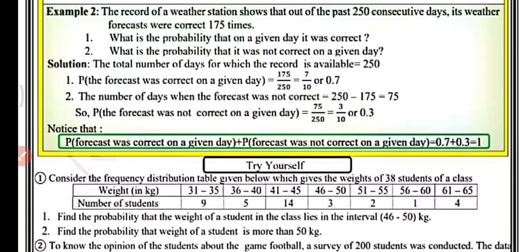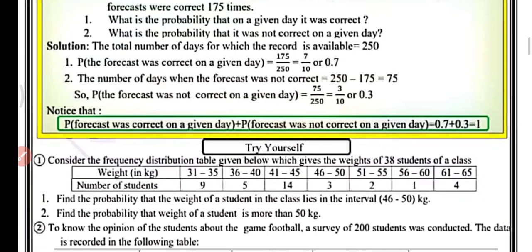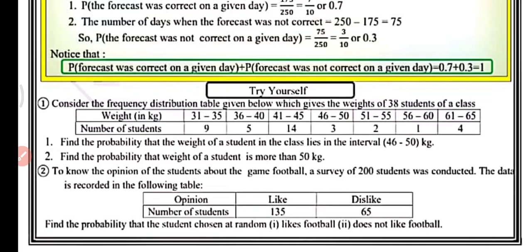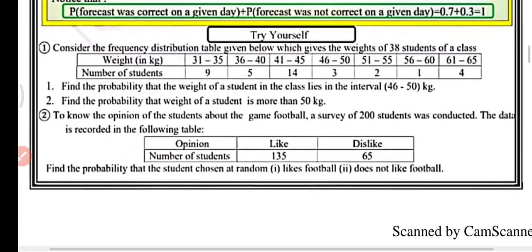What is the probability that on a given day it was correct, and what is the probability that it was not correct? The probability that the forecast was correct on a given day is 175 upon 250, that is 7 upon 10, which equals 0.7. The number of days when the forecast was not correct equals 250 minus 175, that is 75. So the probability that the forecast was not correct is 75 upon 250, that is 3 upon 10, which equals 0.3. Note that P(correct) + P(not correct) = 0.7 + 0.3 = 1, illustrating that P(E) + P(not E) = 1.